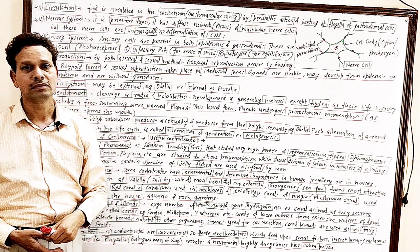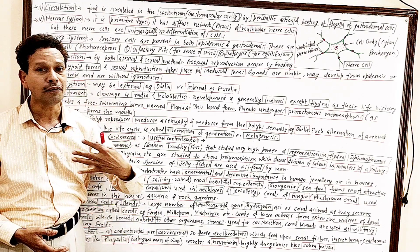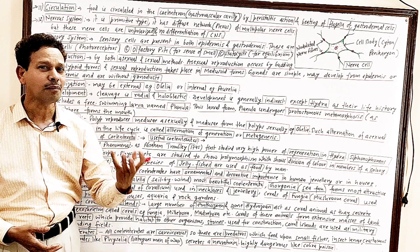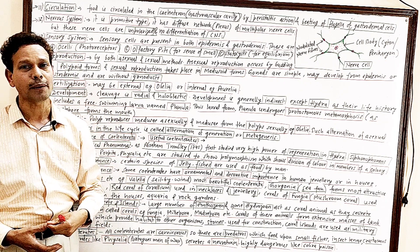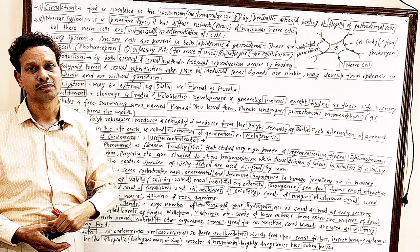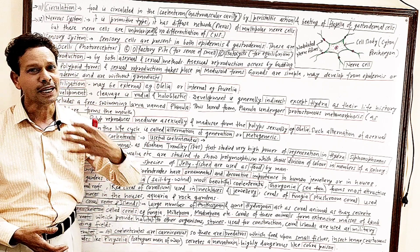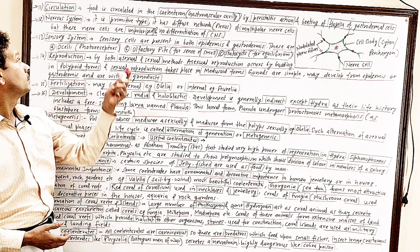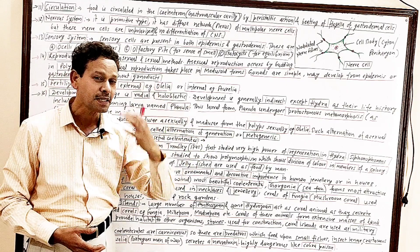Fluid circulation in cnidarians occurs through the main body cavity, that body cavity called the gastrovascular cavity. In that gastrovascular cavity, food circulates by peristaltic actions and the beating of flagella of gastrodermal cells.